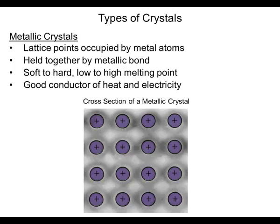Metallic crystals have the lattice points occupied by metal atoms. They are held together by a metallic bond. They vary from being soft to hard and from having low to very high melting points. They are all good conductors of heat and electricity. Here is a cross section of a metallic crystal.